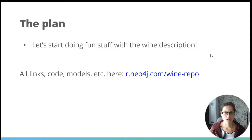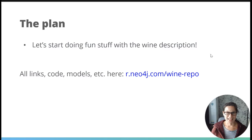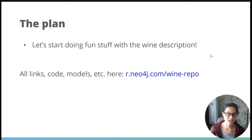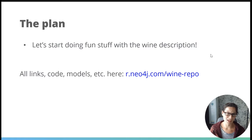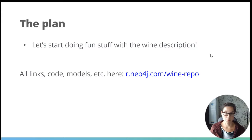Last week we looked at the variety node - a node label called variety that had grape information, like whether it was a blend. Something I was really keen to look at this week is the wine description. Each of the wines we imported had a description talking about tasting notes - things like lemons or fruit. What I'd like to do is pull out some interesting words and then maybe start to link wines based on similar features. That's the plan for today.